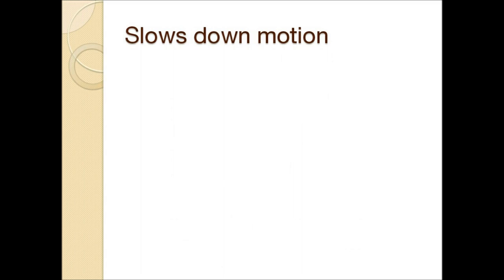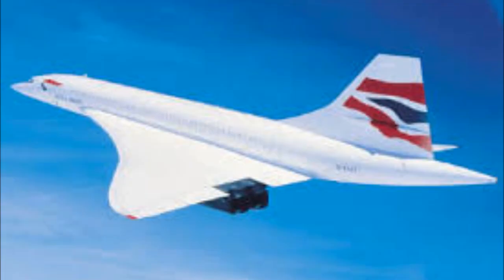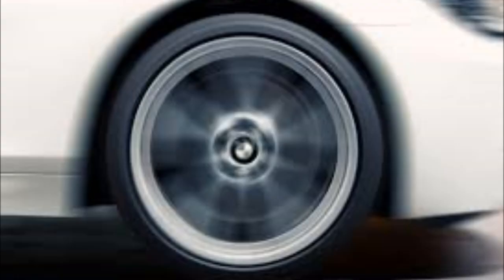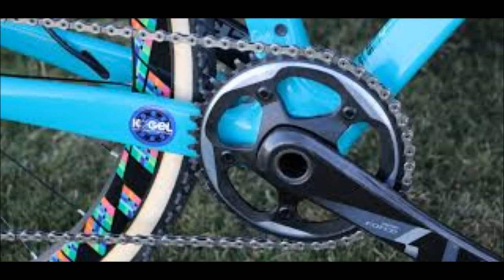Friction reduces the motion of moving parts of a machine. In fact, all moving things such as cars, buses, aeroplanes, and boats are all slowed down due to friction. So friction is a disadvantage in the sense that it actually slows down the motion of a moving vehicle.